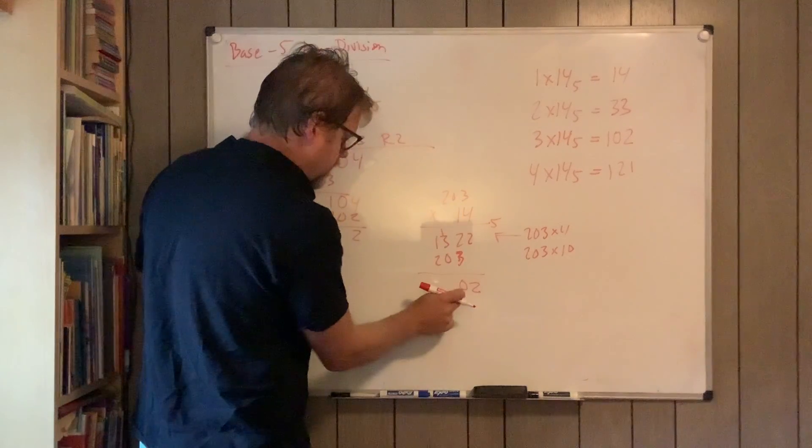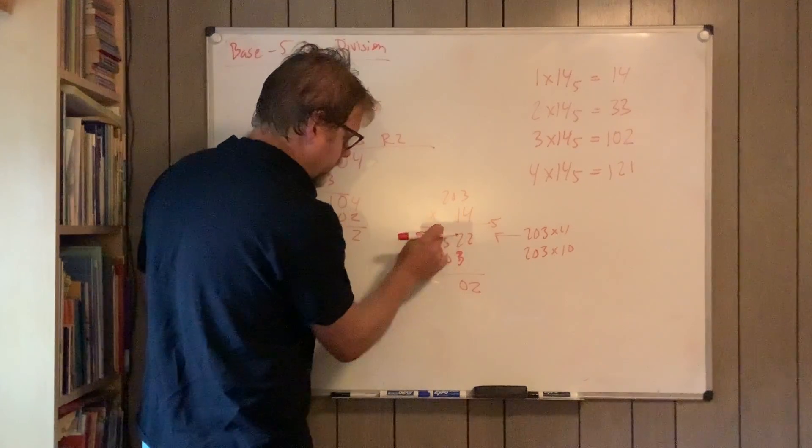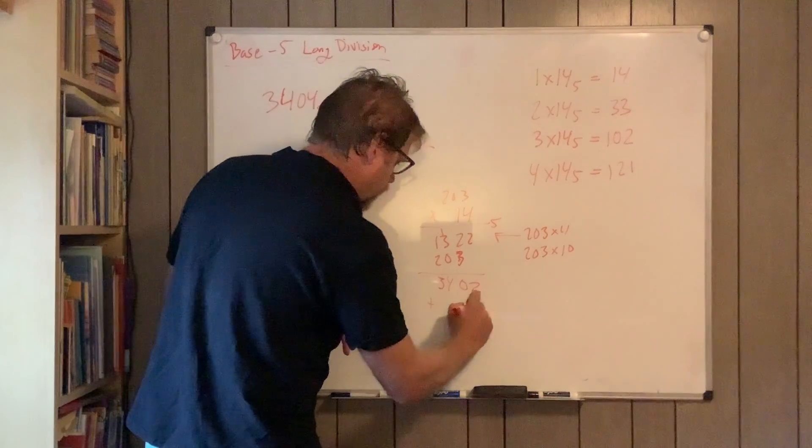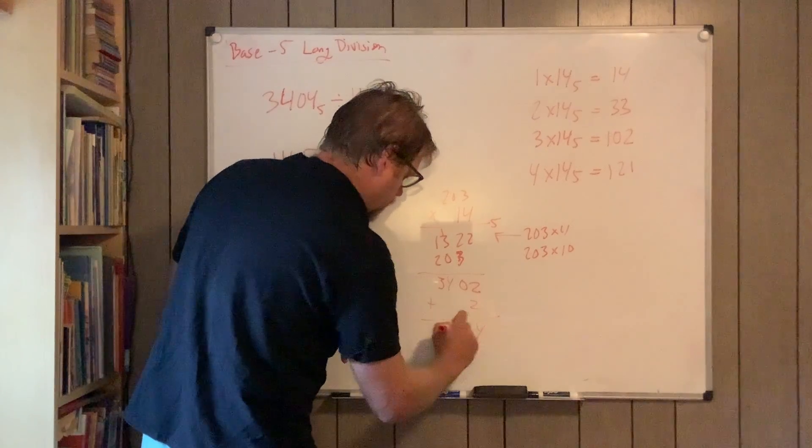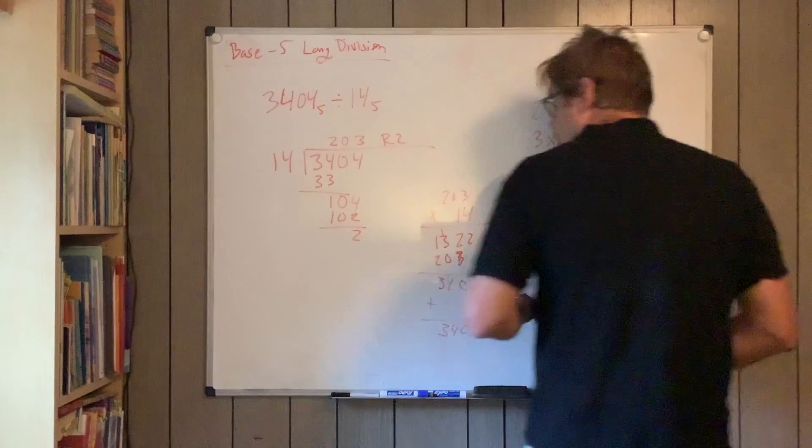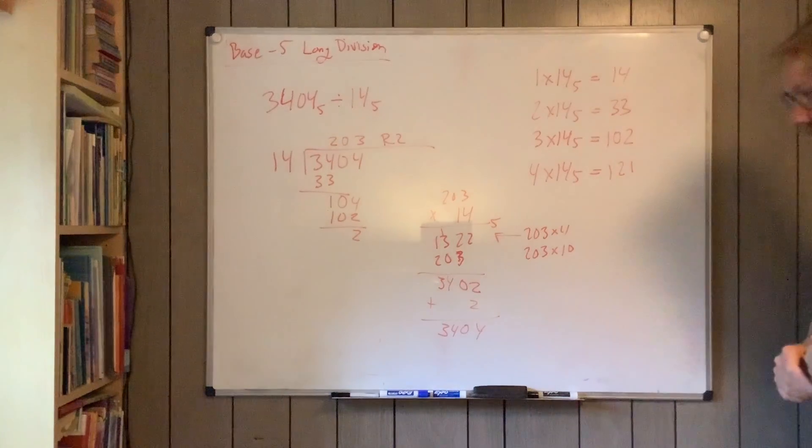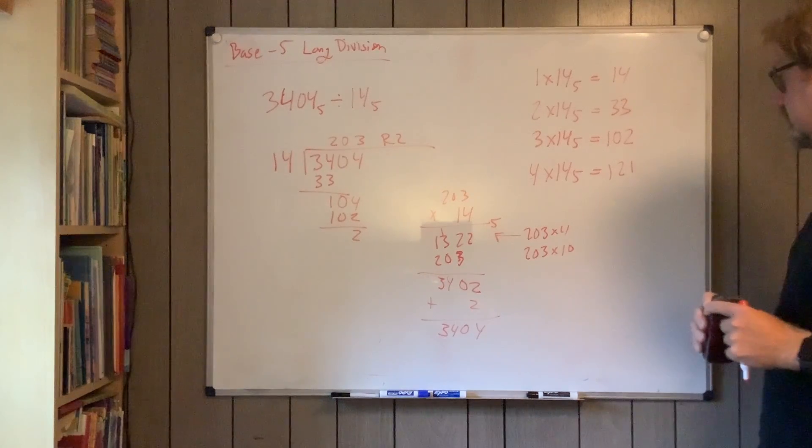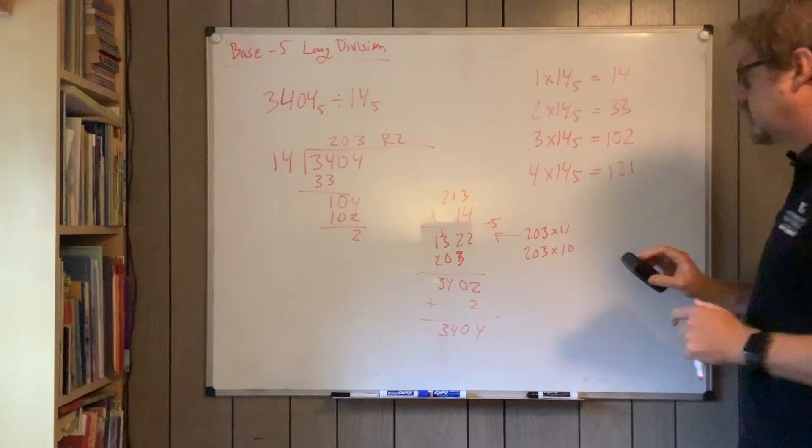And then I'm going to add 2. That's 5, which is 0 pennies one nickel. There's 4, there's 3. And then I'm going to add 2. 4034. So it checks out.